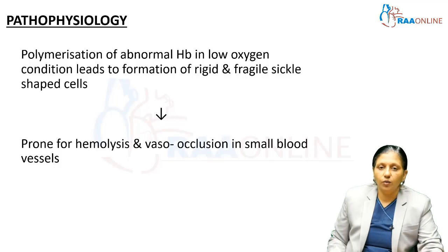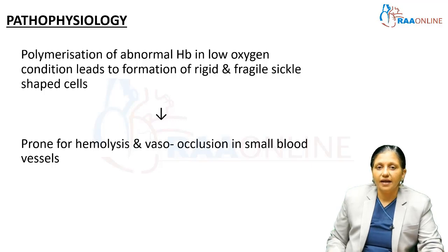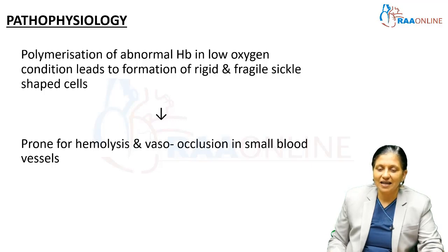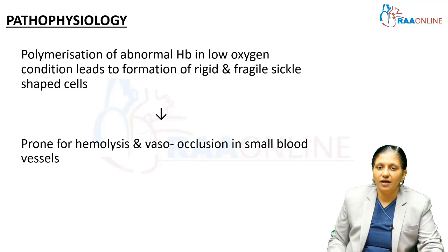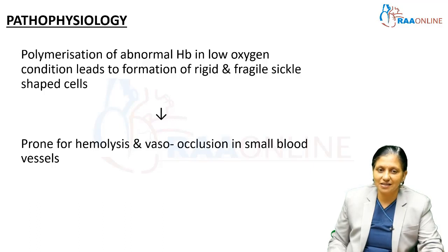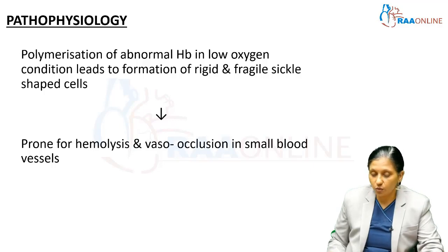In normal conditions HbSC is okay, but in abnormal conditions — particularly low oxygen — there is polymerization of the abnormal hemoglobin SS. This leads to formation of rigid and fragile sickle-shaped cells, which are prone to hemolysis and vaso-occlusion in small blood vessels.